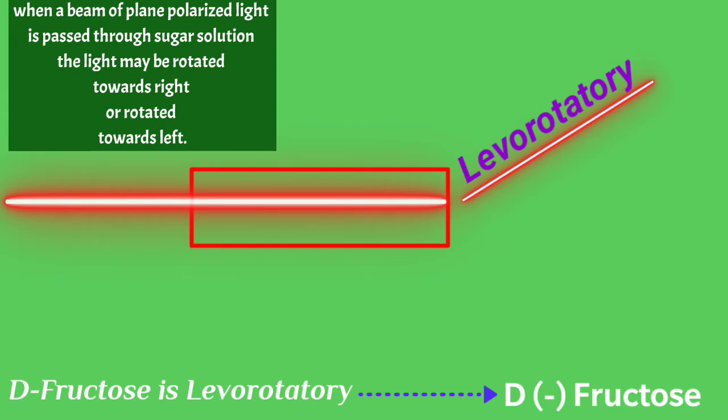Coming to other situation, when light is passed through the sugar solution, if it is rotated towards left, then it is called levorotatory. For example, D-fructose is levorotatory and that can be represented as D minus fructose. And again here D indicates the orientation of OH and H groups on the last but one carbon of the fructose and minus symbol indicates that fructose is levorotatory. That means it rotates the light towards the left.